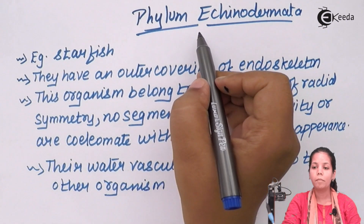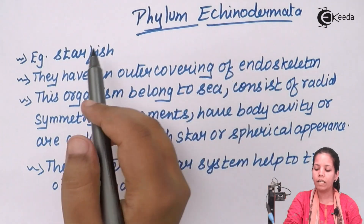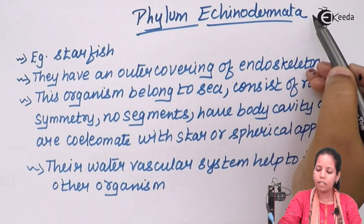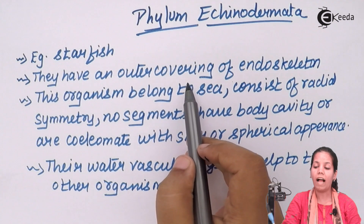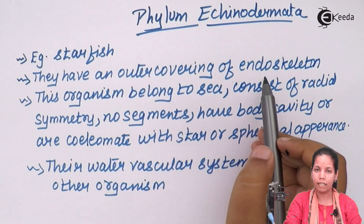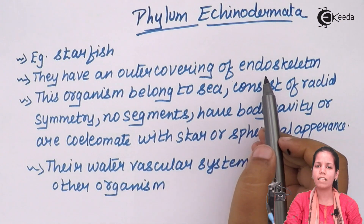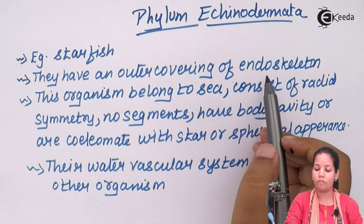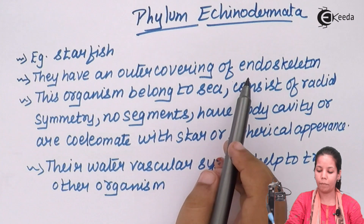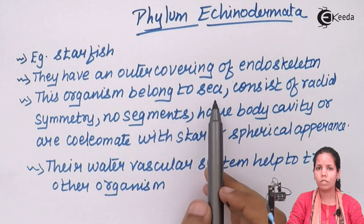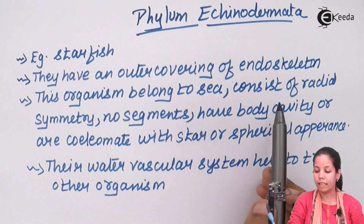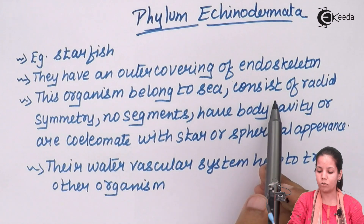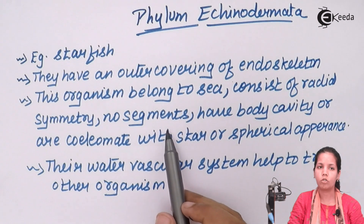One of the examples of Phylum Echinodermata would be starfish. Starfish basically have an outer covering or endoskeleton that protects itself — it's a form of protection. Other organisms will have claws or fins, but starfish has the endoskeleton covering. These organisms belong to sea or aquatic life. They have radial symmetry, and having radial symmetry, there are no segments on the body region of the starfish.